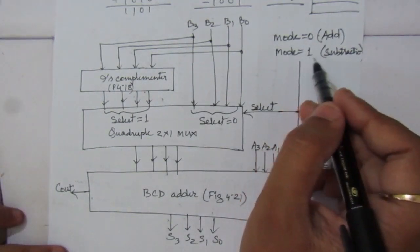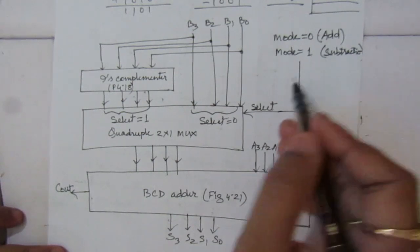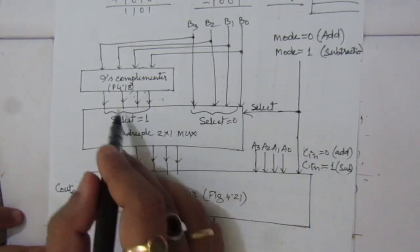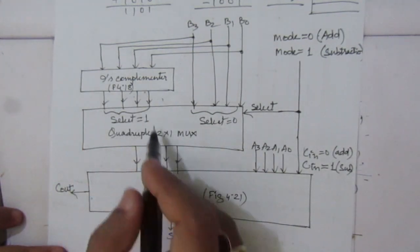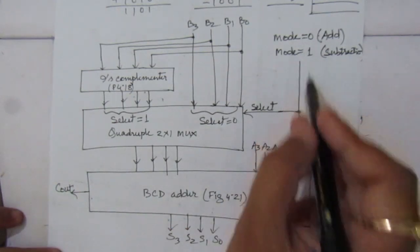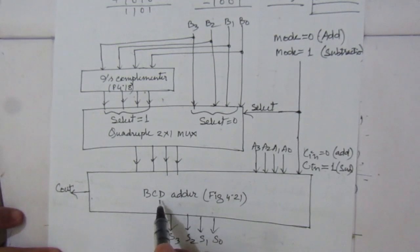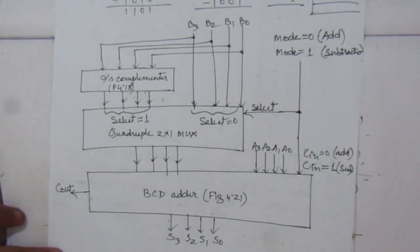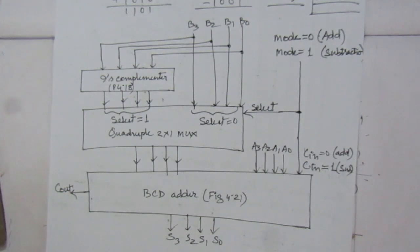To summarize: when mode equals 0, addition is performed — the B values pass directly through the multiplexer and are added with A in the BCD adder, giving the sum and carry outputs. When mode equals 1, subtraction is performed — the 9th complement of B passes through, Cin equals 1 completes the 10's complement, and the BCD adder gives the subtraction result. This is the solution to problem 4.19. Thank you for watching — please leave questions in the comments, and like, share, and subscribe.